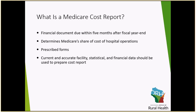The Medicare Cost Report is basically a financial document that is due within five months after your fiscal year end. It is something that is filed with Medicare and can also be used by a number of other different users. Overall, it basically determines what Medicare owes your hospital — what Medicare's share of the cost of hospital operations is. There are standard forms that Medicare provides, and most cost report preparers will have software they use to enter information. Essentially, we are reporting historical data so Medicare can determine what they owe you.